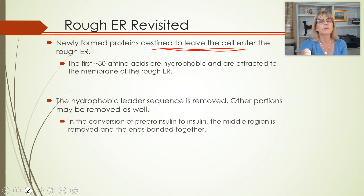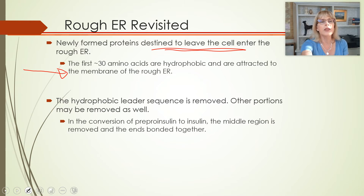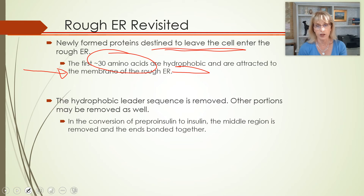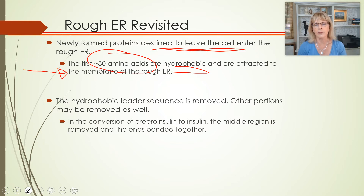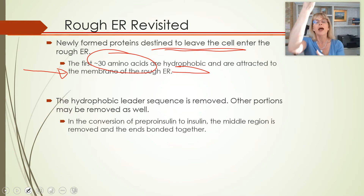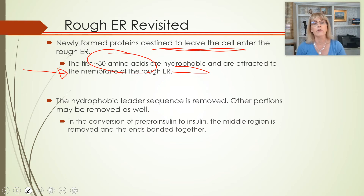The answer is that when proteins need to be made in the rough endoplasmic reticulum, the first 30 or so amino acids are hydrophobic. Those hydrophobic amino acids get attracted to the membrane of the rough endoplasmic reticulum, and that actually draws the ribosome there so that the rest of the protein gets made inside the rough endoplasmic reticulum.